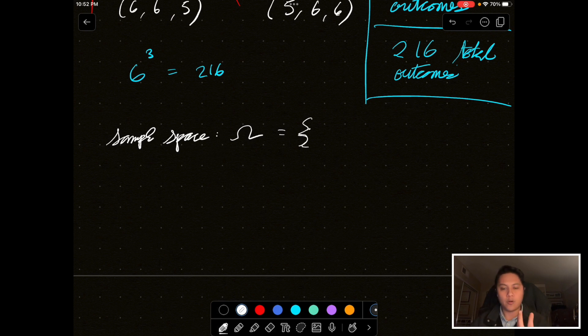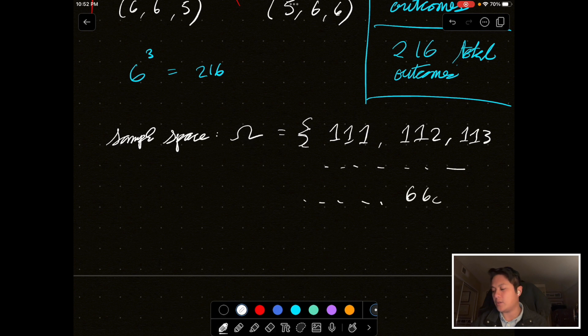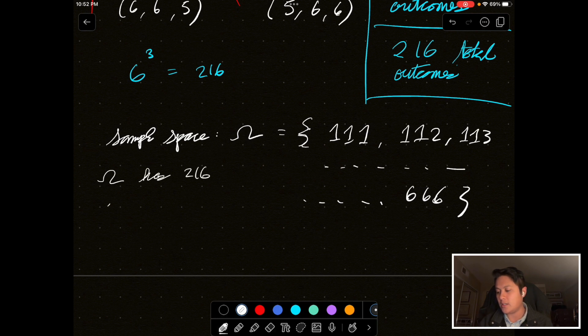So, for the three rolls of this dice, we can have 1, 1, 1, 1, 1, 2, 1, 1, 3. And, we'll go on and on and on and on until we get to number of the beast, 666. And, there are 216 total elements in this set. So, I'll say omega has 216 total elements.